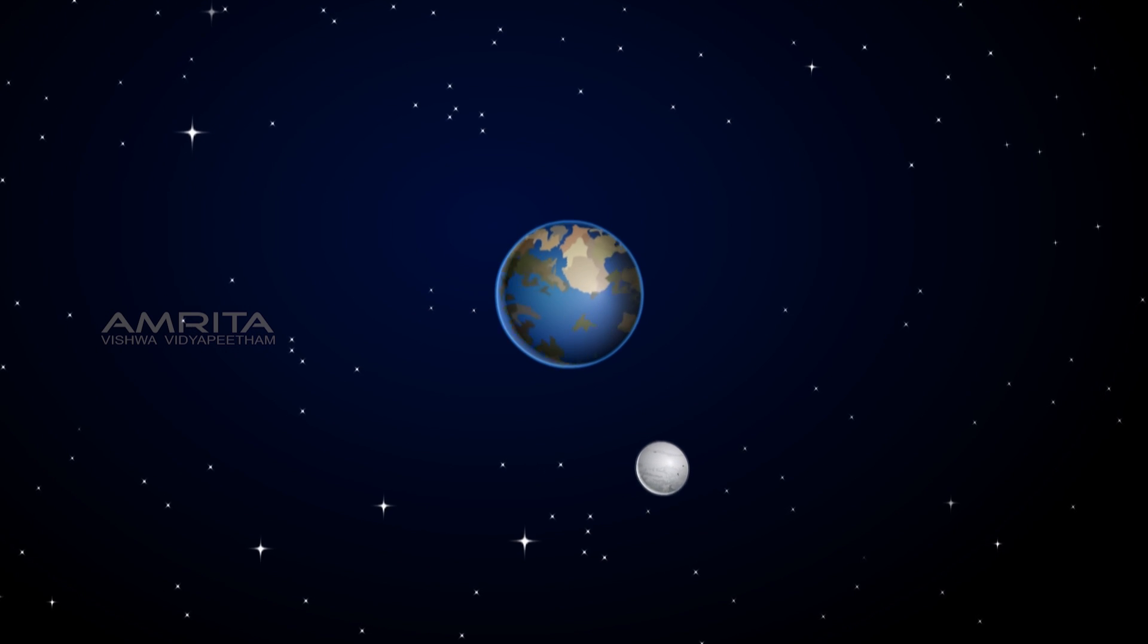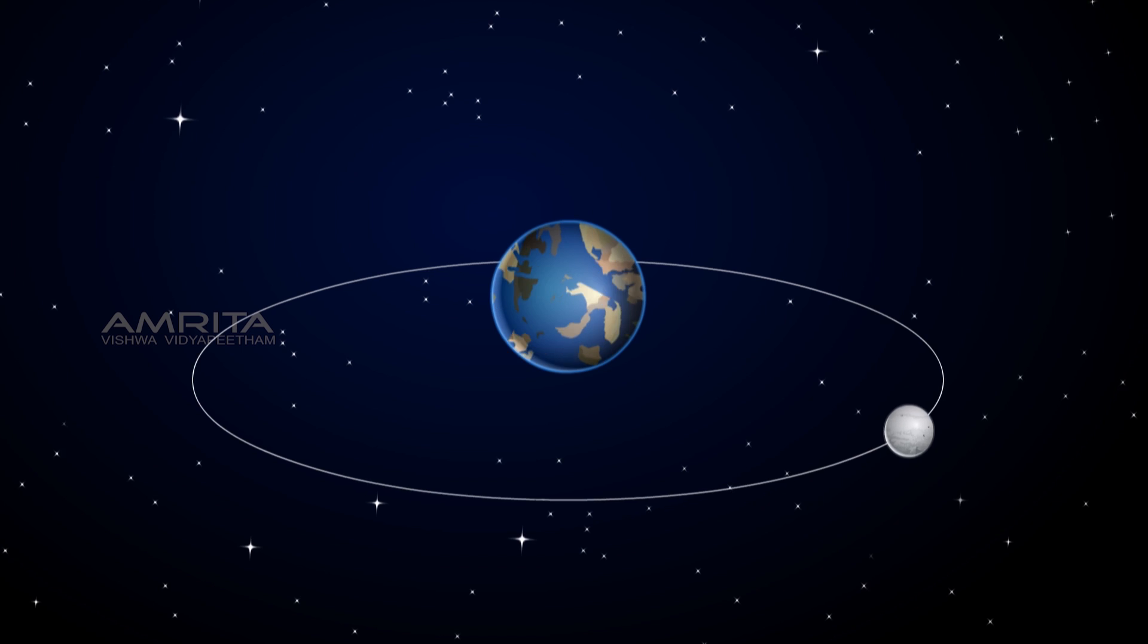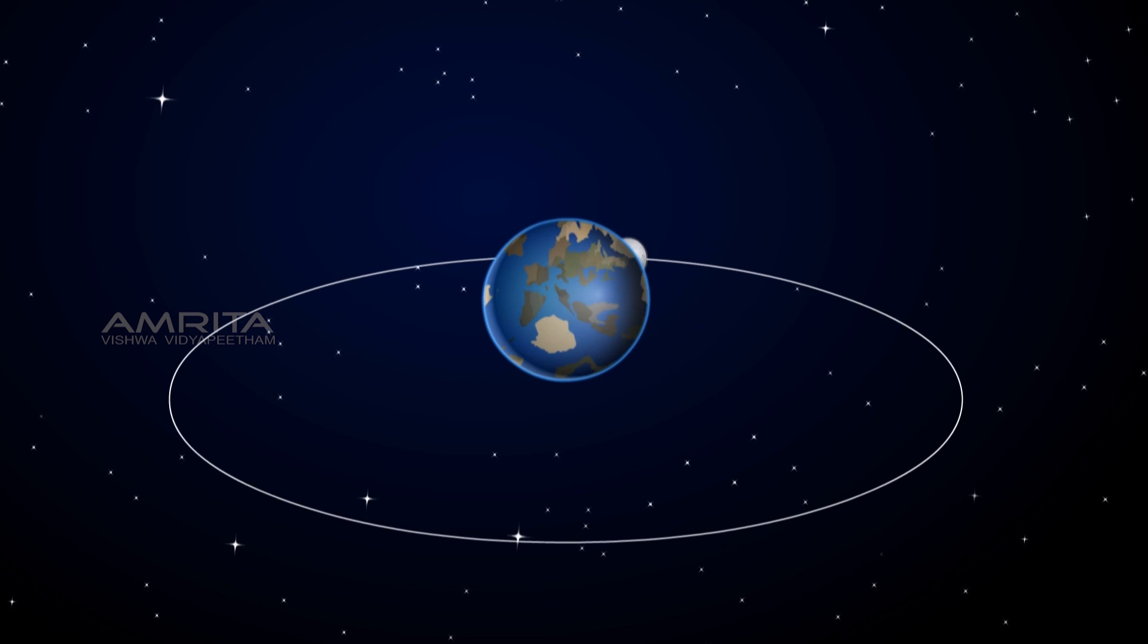Newton argued that at each point of its orbit, the moon falls towards the earth instead of going off in a straight line. This is due to centripetal force.